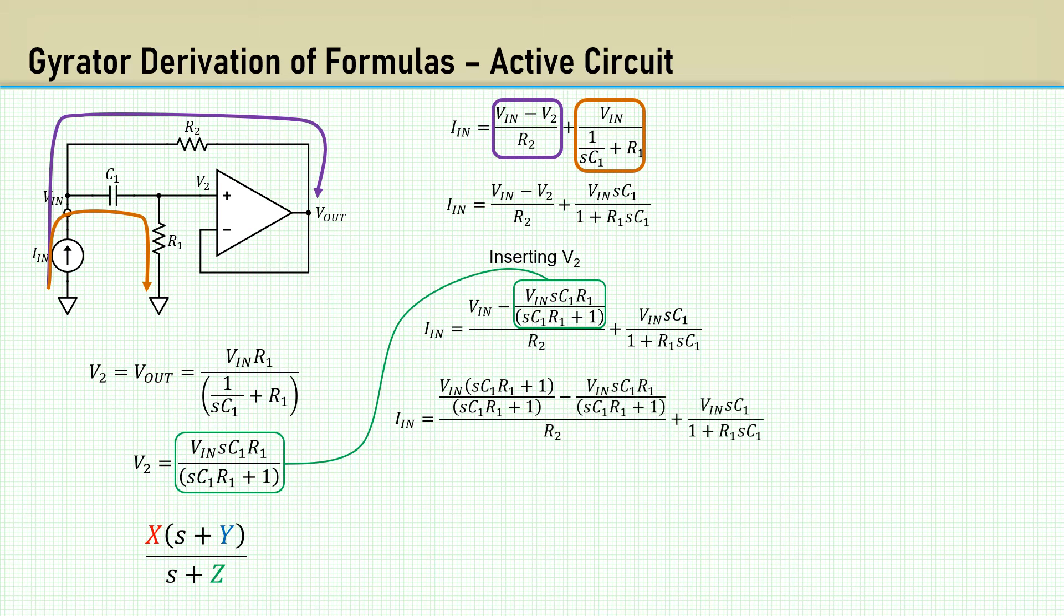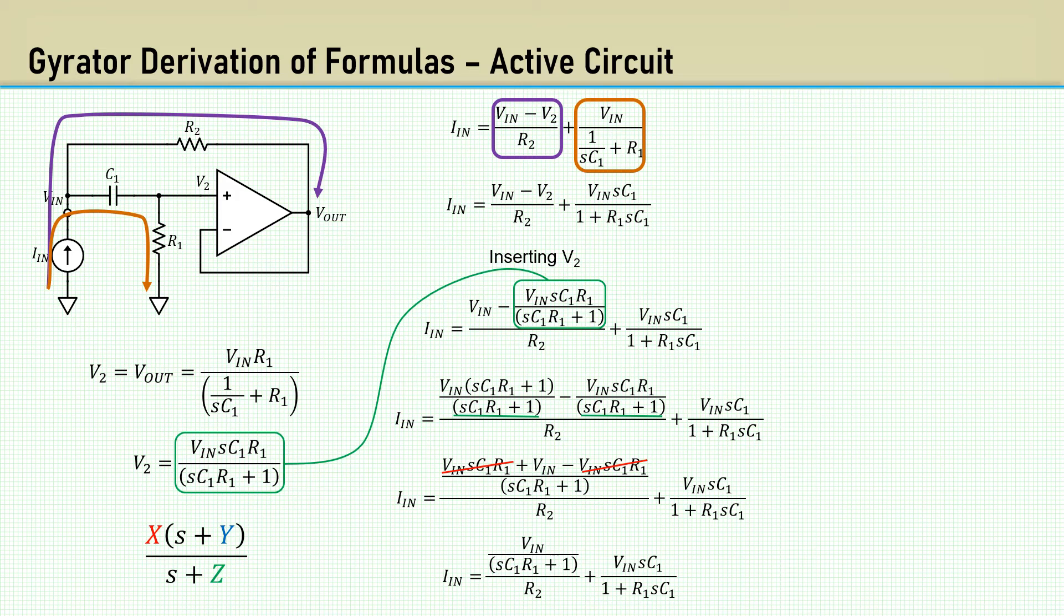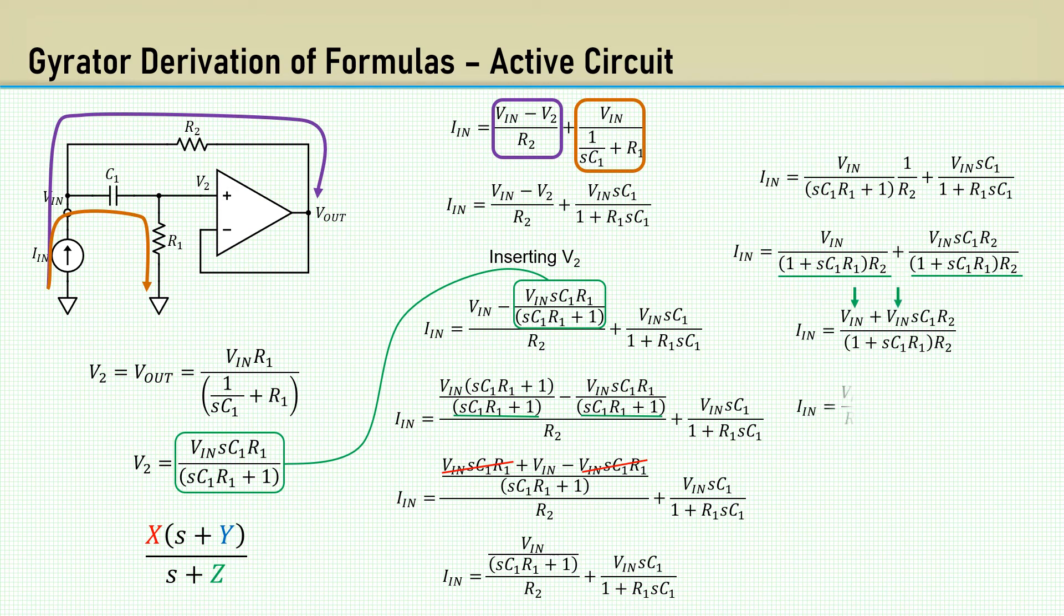Making a common denominator to subtract terms. Let's get rid of that pesky R2 on the bottom of the left side. Multiplying by 1 over R2 accomplishes that. To add the left and right terms together, we need a common denominator. So we multiply the right term by R2 over R2. Then adding the terms in the numerator. Now factor out Vn. The input impedance Zn equals Vn over In. So substituting In gives us this.